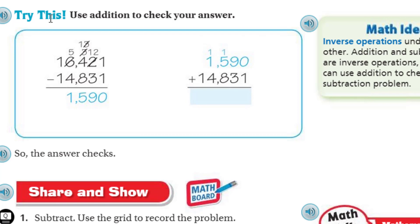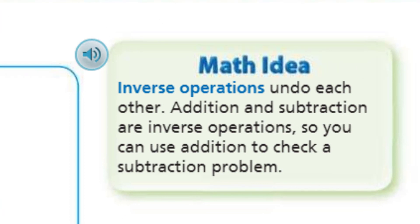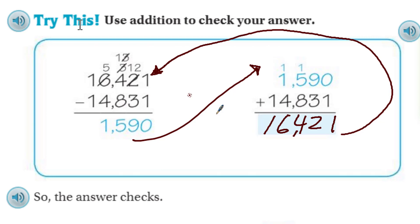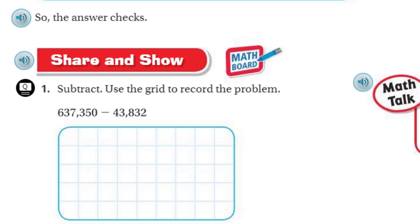Use addition to check your answer. This is what I would do if I was taking a test. This is a math idea: inverse operations undo each other. Addition and subtraction are inverse operations, so you can use addition to check a subtraction problem. We're adding 14,831 and 1,590: carry the 1 — that's 13, that's 14, carry the 1 — that's 5, so that's 6, and that's 1. I end up with 16,421, which matches. The answer checks.